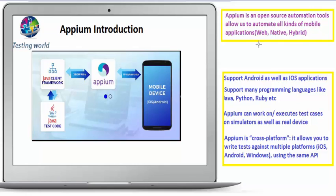APM is a free, open source automation tool for automating mobile applications — whether web, native, or hybrid. One advantage of APM is that it supports Android as well as iOS applications, and even Windows applications. Most mobile devices have either Android or iOS, and APM supports both kinds of applications.